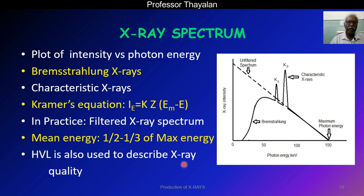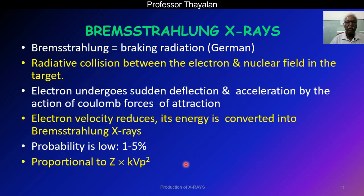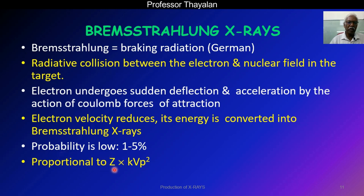The half-value layer is also used to describe X-ray energy spectrum quality. Bremsstrahlung means 'braking radiation' in German. It is due to a radiative collision between an electron and the nuclear field in the target. The electron undergoes sudden deflection and acceleration by the action of Coulomb forces of attraction, causing the electron velocity to reduce. The energy is converted into Bremsstrahlung X-rays. The probability of Bremsstrahlung is very low — around 1 to 5%. Bremsstrahlung probability is proportional to the atomic number Z and the applied kilovoltage peak. As atomic number or applied voltage increases, probability of Bremsstrahlung also increases.